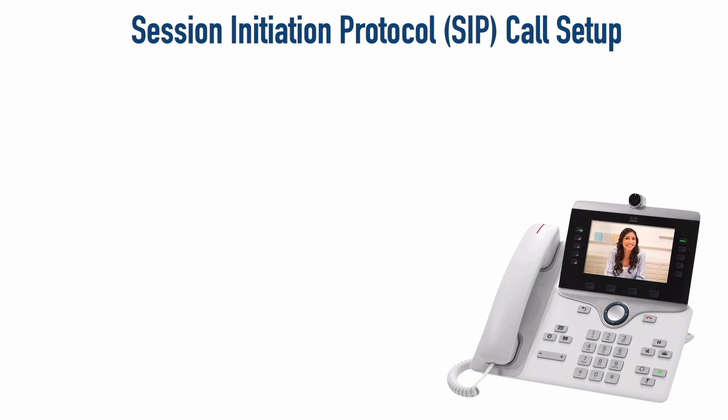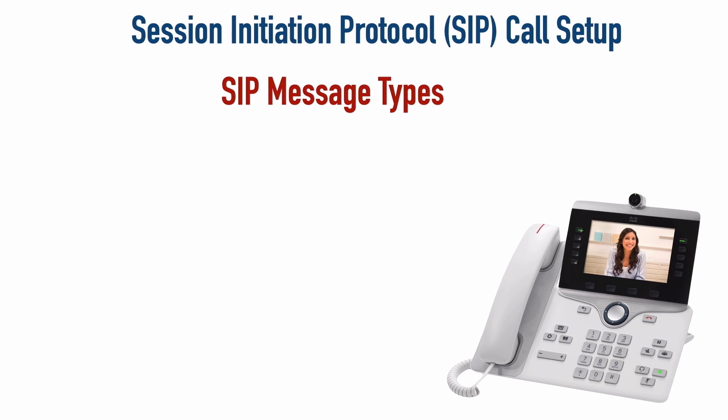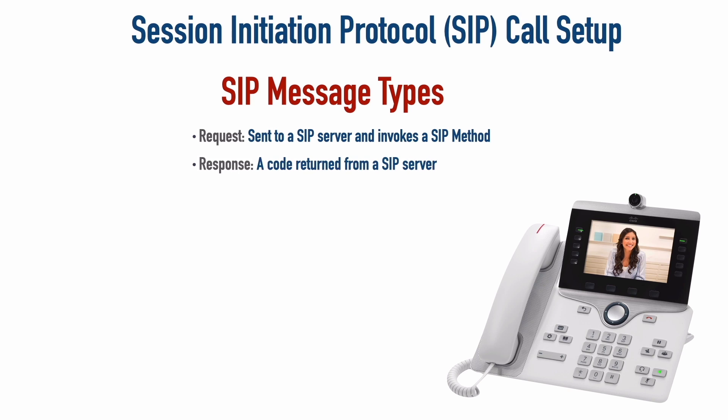Those are the only types of phones we're going to be using in this course — we're not going to be looking at the Skinny or SCCP-speaking phones, just SIP. First, let's understand that SIP has a couple of message types: requests and responses. These message types are not going to be sent directly between the IP phones themselves. Instead, a message is going to go between an IP phone and a SIP server, and primarily in our environment the SIP server is the Cisco Unified Communications Manager.